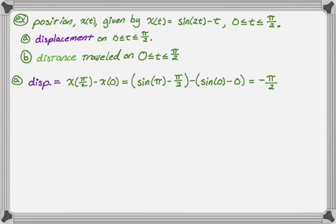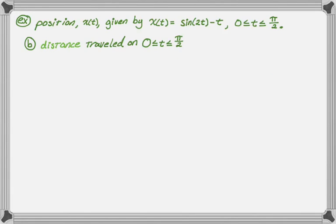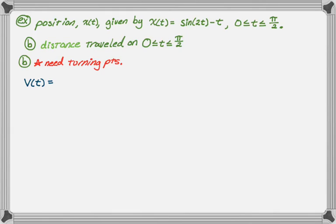Distance traveled is going to be a little more work. First, we need to find when this thing turns around — the turning points — which involves finding the derivative. So v(t) = x′(t). Using the chain rule on sin(2t) gives 2cos(2t), and the derivative of −t gives −1. That's our velocity function. Now I need v(t) = 0, which means 2cos(2t) − 1 = 0, so cosine of 2t equals positive one-half.